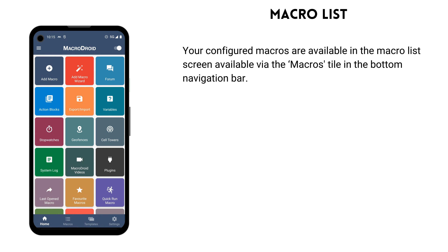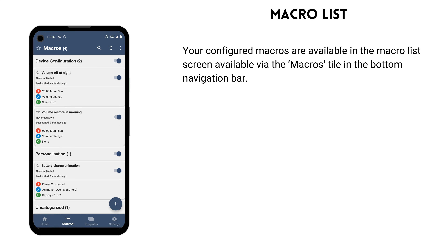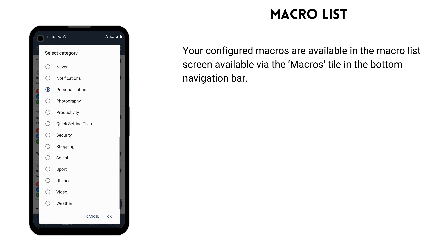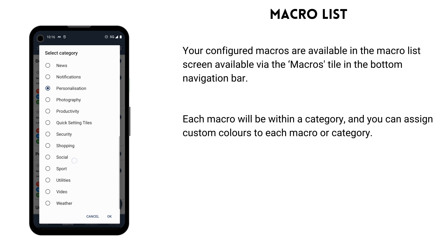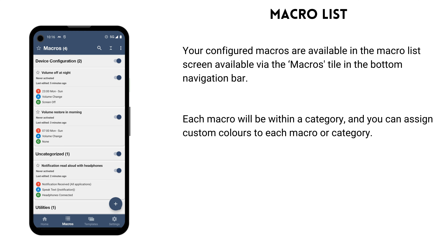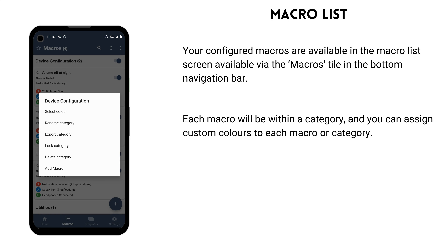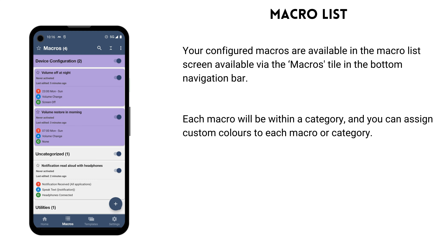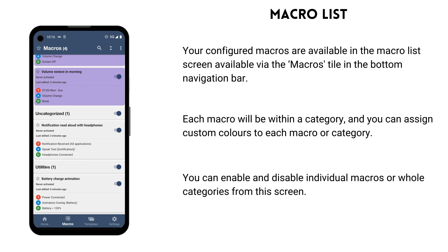Each created macro can be found in the macro list screen, available via the macros tile in the bottom navigation bar. On this screen, you can assign your macros to appropriate categories and assign customised colours if desired. You can also enable and disable individual macros or entire categories from this screen. A macro will only run if it's enabled and the category it is within is also enabled.